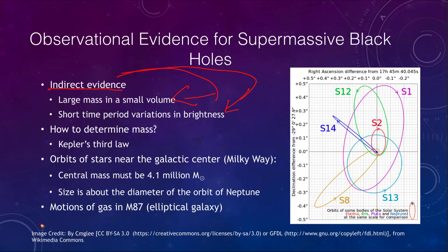To really determine that, we have to be able to determine the mass. We need Kepler's third law — our good way of being able to determine the mass. We can look near the center of our galaxy, near the center of the Milky Way, and look at the orbits of various stars that are very close to the central object.